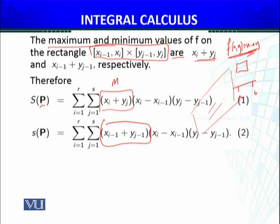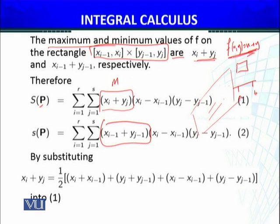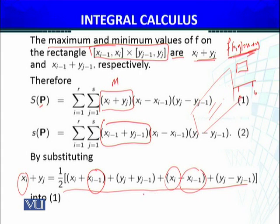By substituting xᵢ + yⱼ equals one-half times [(xᵢ + xᵢ₋₁) + (yⱼ + yⱼ₋₁) + (xᵢ - xᵢ₋₁) + (yⱼ - yⱼ₋₁)], we can rewrite the equation. Similarly, we determine the lower sums.